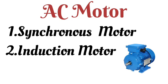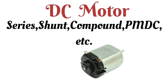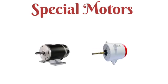There are many kinds of DC motors available in the market: series DC motors, shunt DC motors, compound DC motors, PMDC (permanent magnet DC motors), and BLDC (brushless DC motors). In the special category, there are stepper motors and servo motors. These are all the types of special motors.